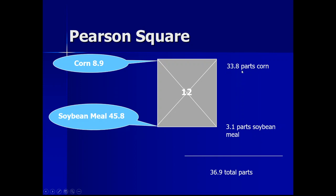The value obtained after diagonal subtraction for soybean meal (33.8%) actually indicates the number of parts of corn, and the value from corn subtraction (3.1%) indicates the parts of soybean meal. Add these two values together: 33.8 + 3.1 = 36.9 total parts. So if we mix 33.8 parts of corn and 3.1 parts of soybean meal, we get a ration of 36.9 parts total that provides 12% protein.